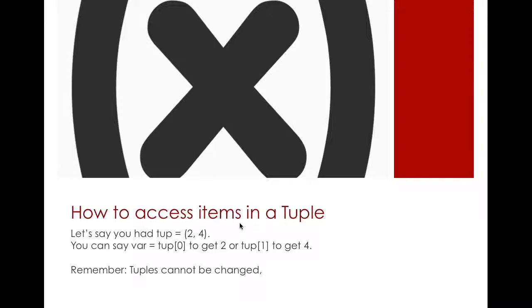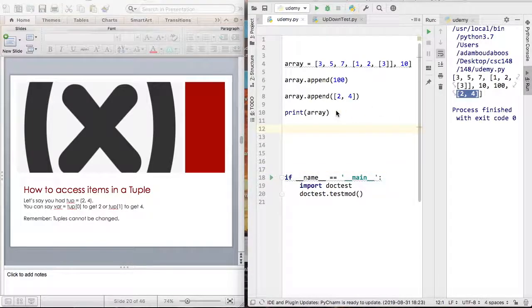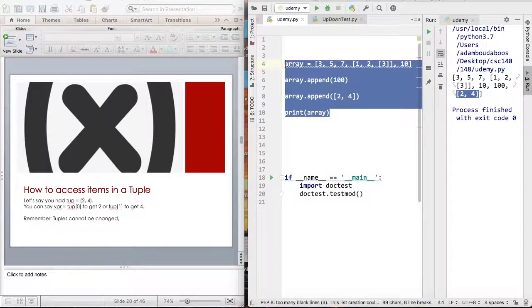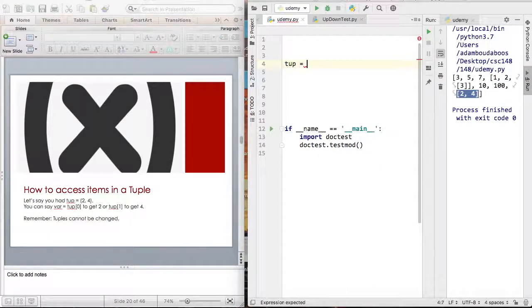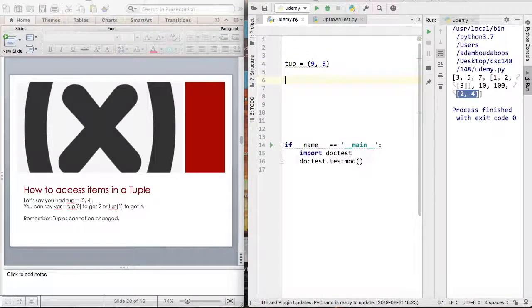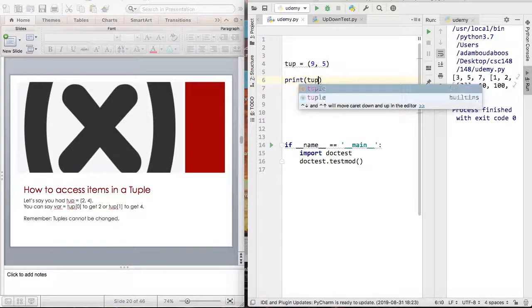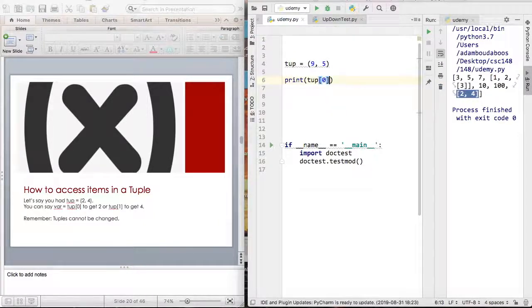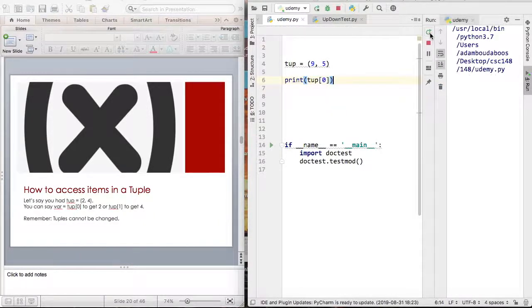A tuple can be accessed, but you cannot change. For example, let me show you in PyCharm something about tuples. Let's say tup equals to nine and five. And then let's say I want to print tup of zero. Yeah, so you will be getting a nine.